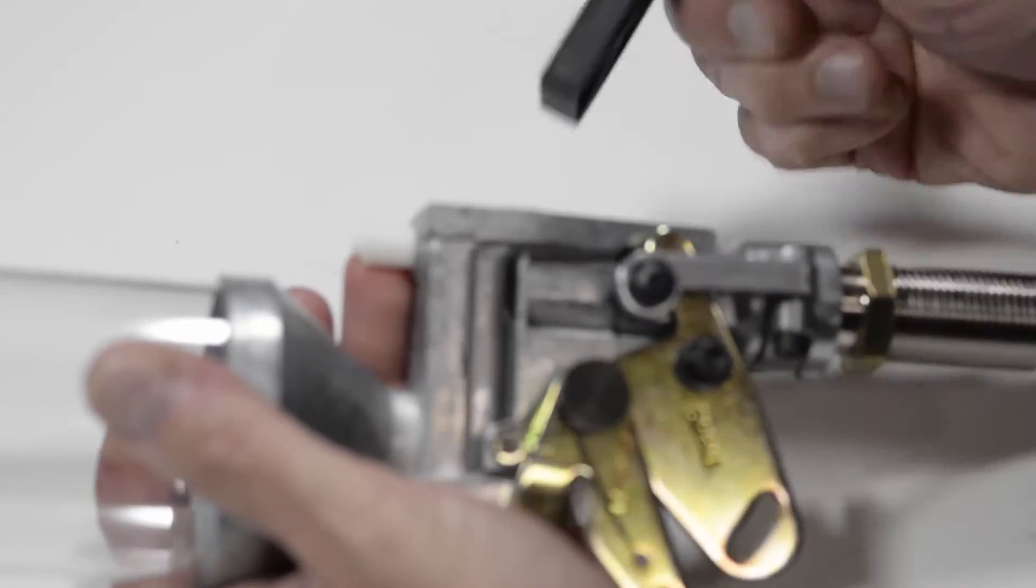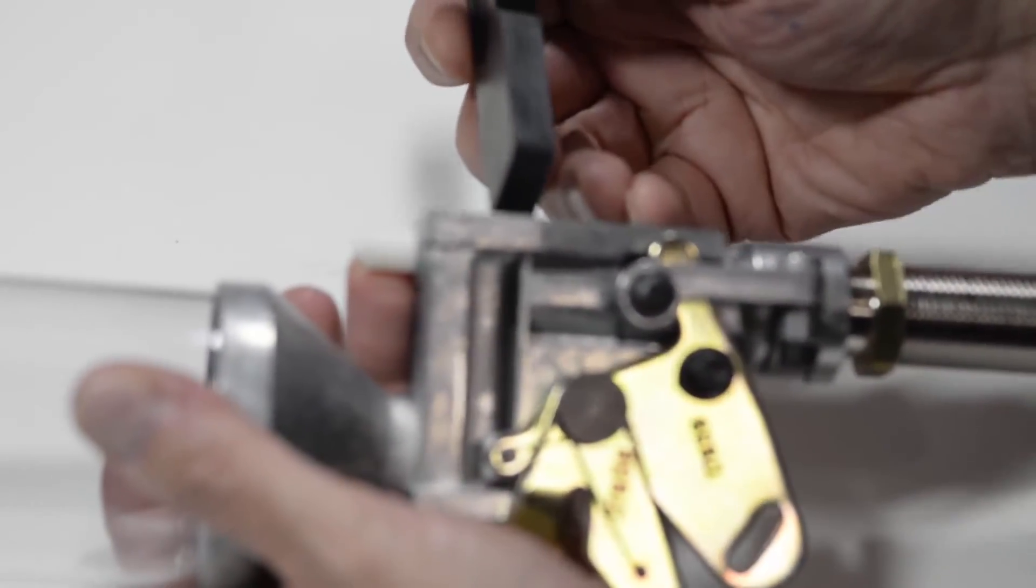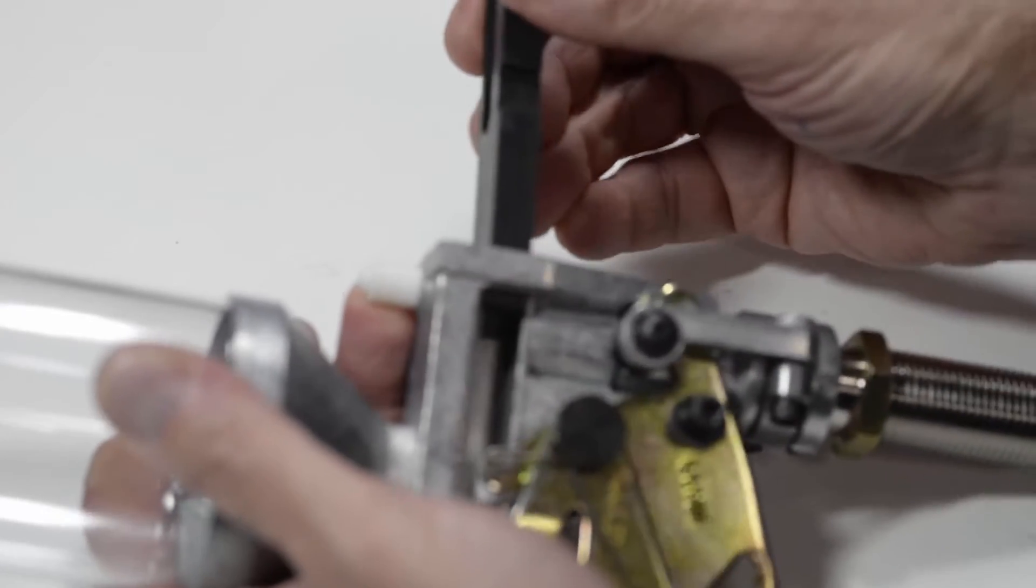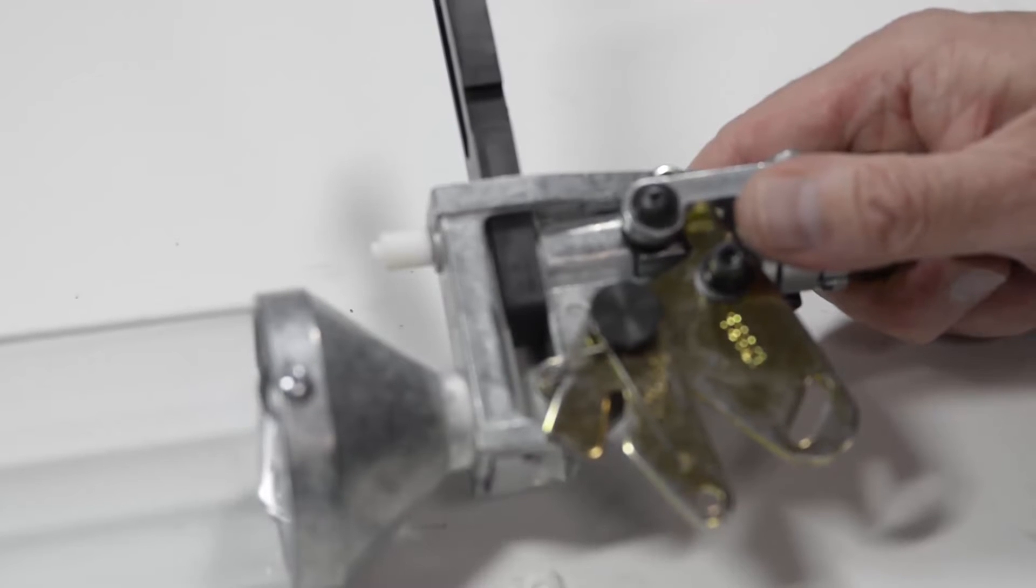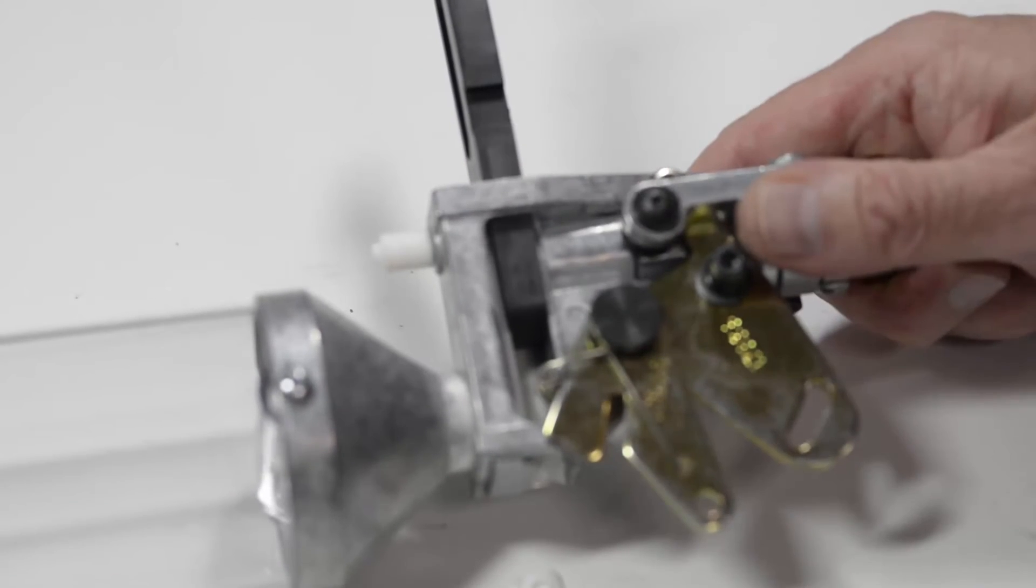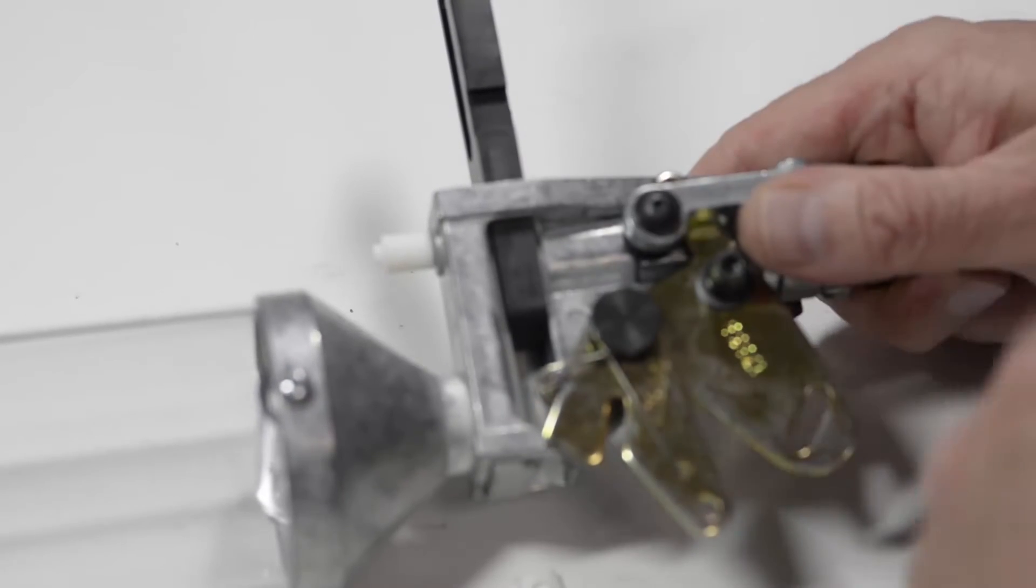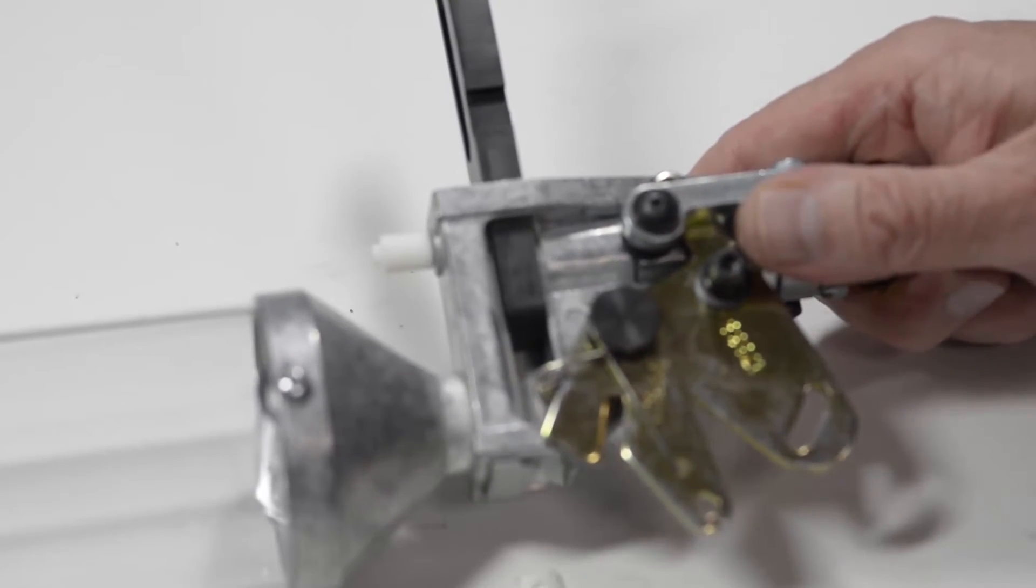Then we take the Arredondo powder bar and insert it into the powder hopper. Well, as you can see, the Arredondo powder bar is so thick that I cannot completely insert it. Therefore, I am going to have to reduce its thickness by sanding it.